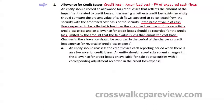For impairment loss due to credit-related factors, you need to calculate the present value of expected cash flows from the available-for-sale securities and compare the present value of expected cash flows with the amortized cost. If the present value of cash flows expected to be collected is less than the amortized cost basis of the security, a credit loss exists and an allowance for credit losses should be recognized. The amount of credit loss is the excess of amortized cost over the present value of expected cash flows. However, the allowance for credit losses should not exceed the excess of the amortized cost over the fair value.